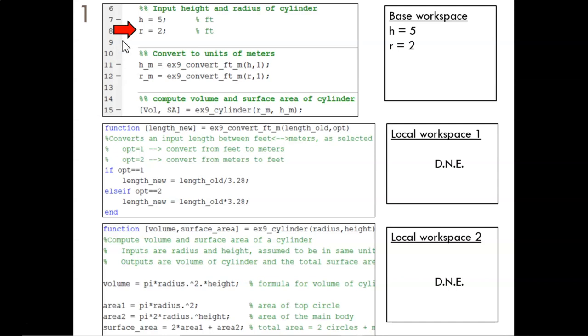After clicking run on the script and processing through this line with the arrow, h and r are defined in the base workspace. Neither of the function's local workspaces exist because the functions have not yet been called.